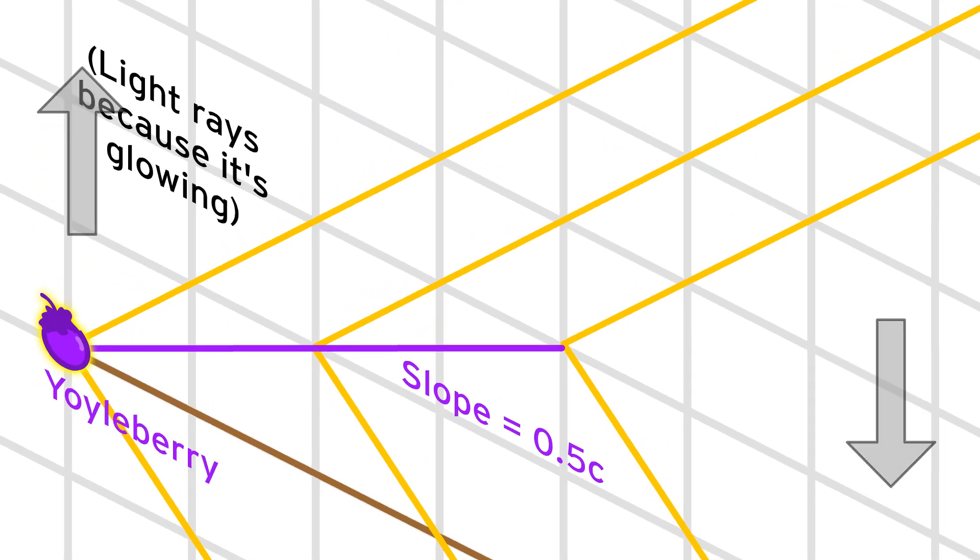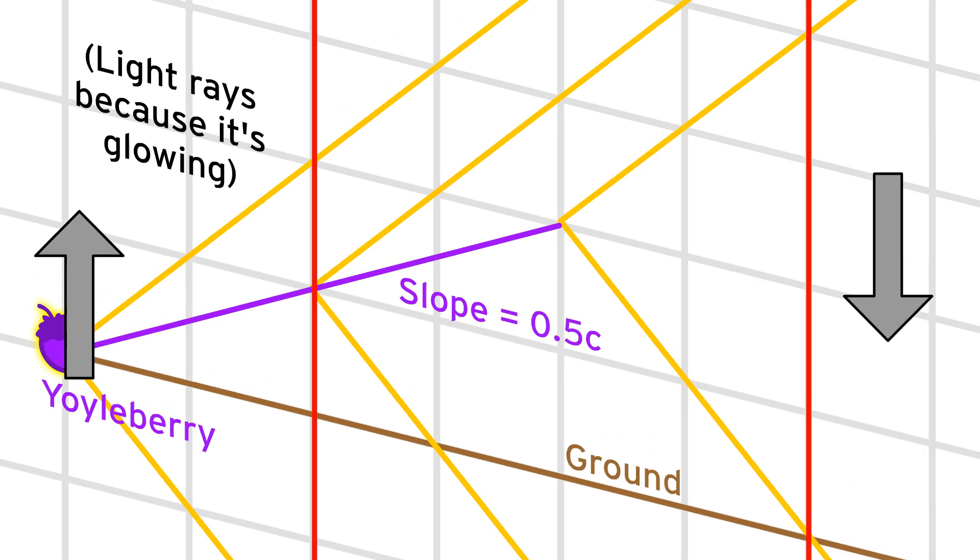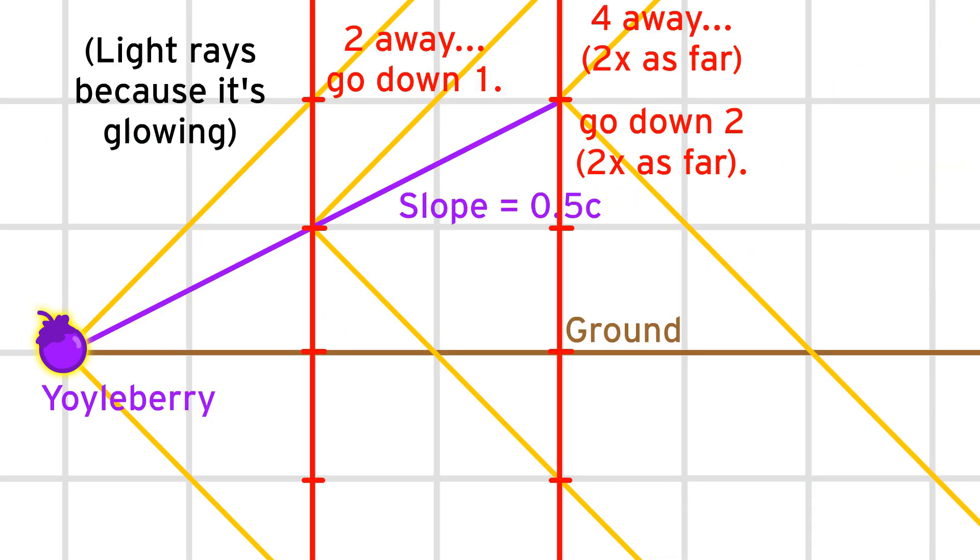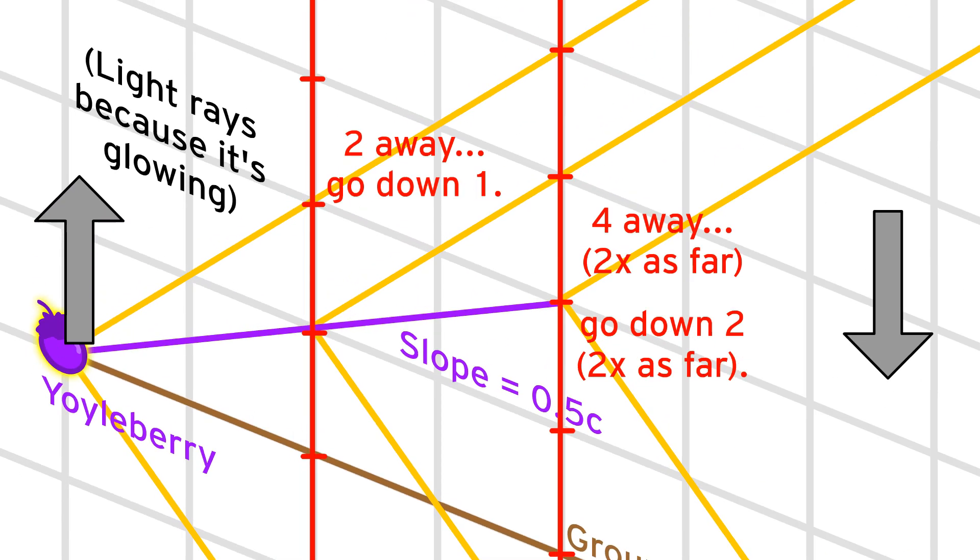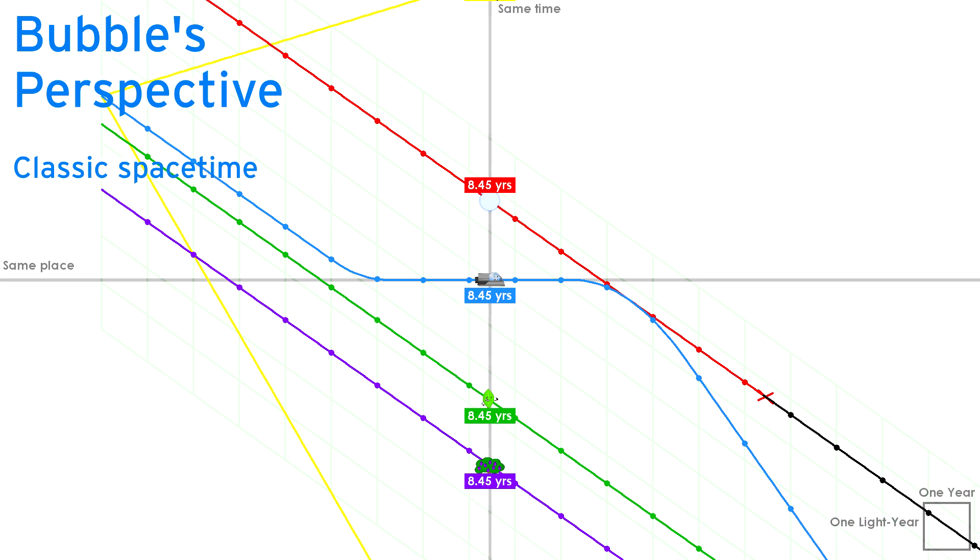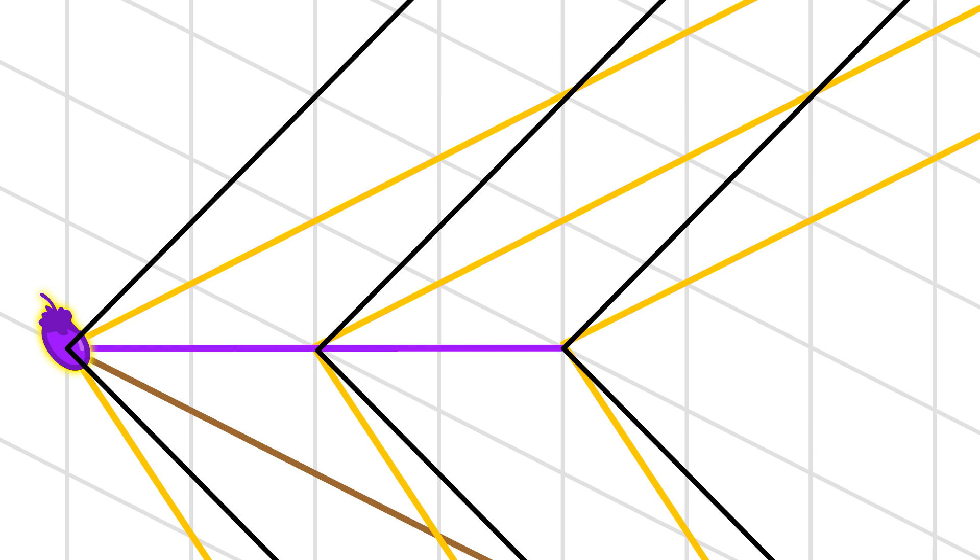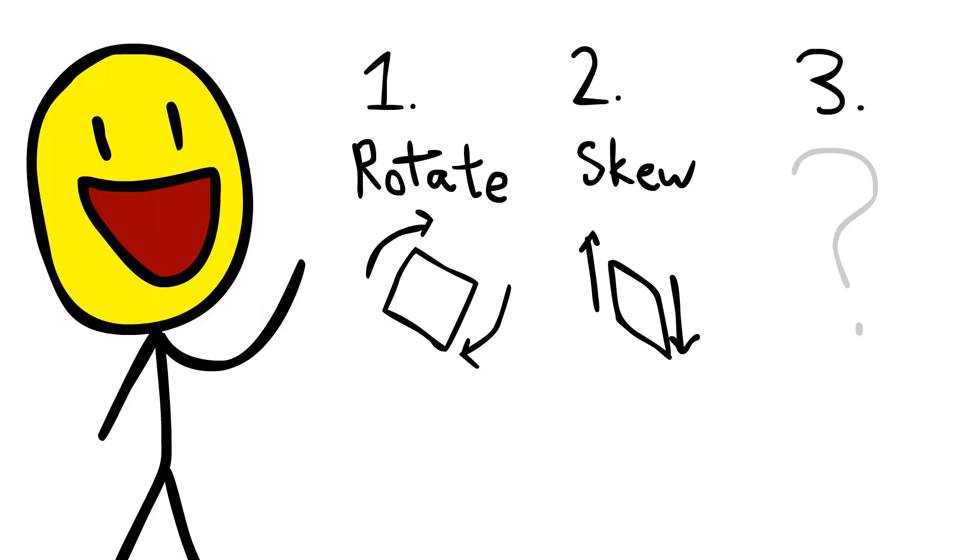What if we skew the whole graph vertically? When we skew vertically, vertical slices of the image stay vertical, but they move up and down proportionally to how far they are away from our object of reference horizontally. A simple vertical skew is also exactly what we saw in the classical view of space-time. However, that doesn't work either because the speed of light is still not diagonal.